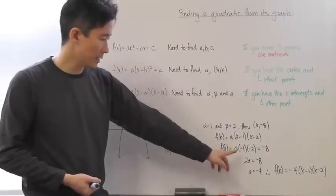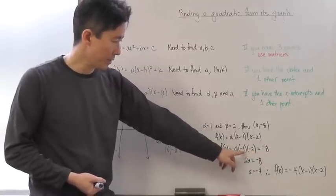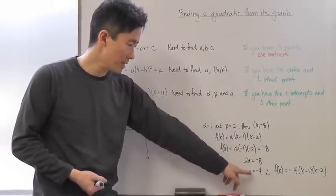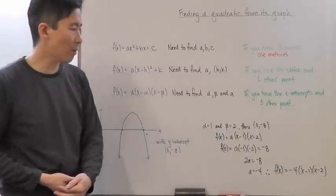Now I can take a look at this part here and say that 2a is going to be equal to negative 8 or a is equal to negative 4.